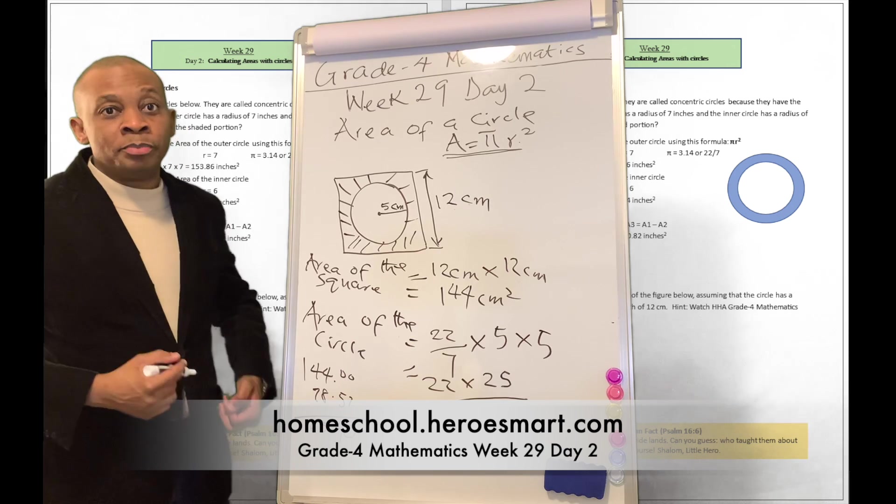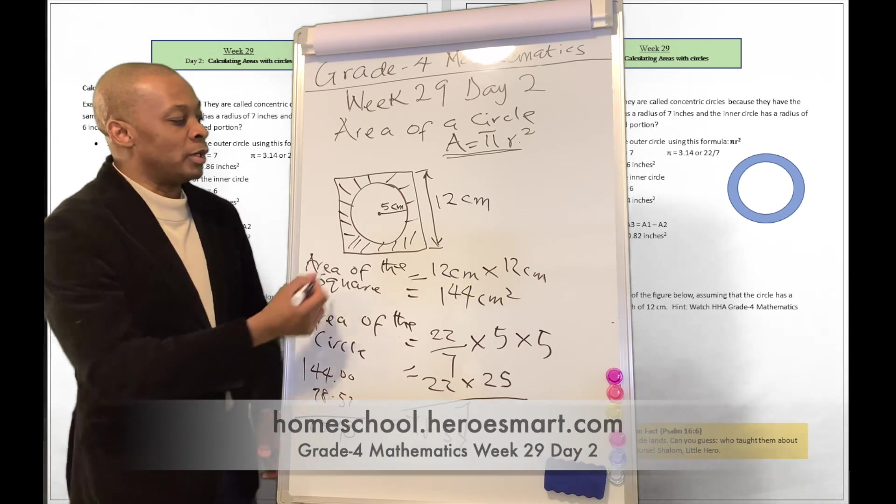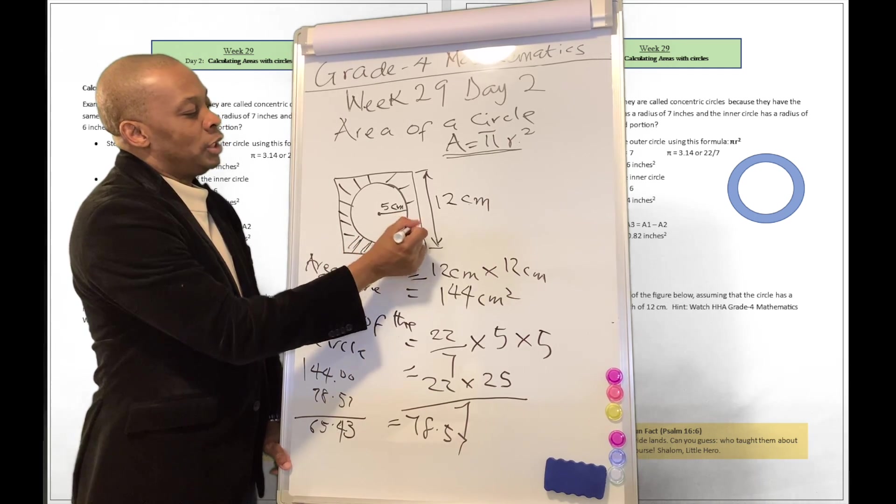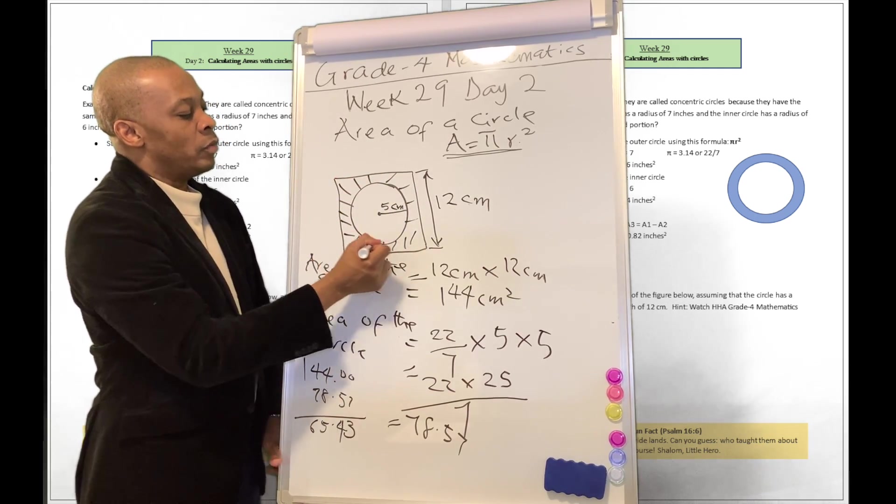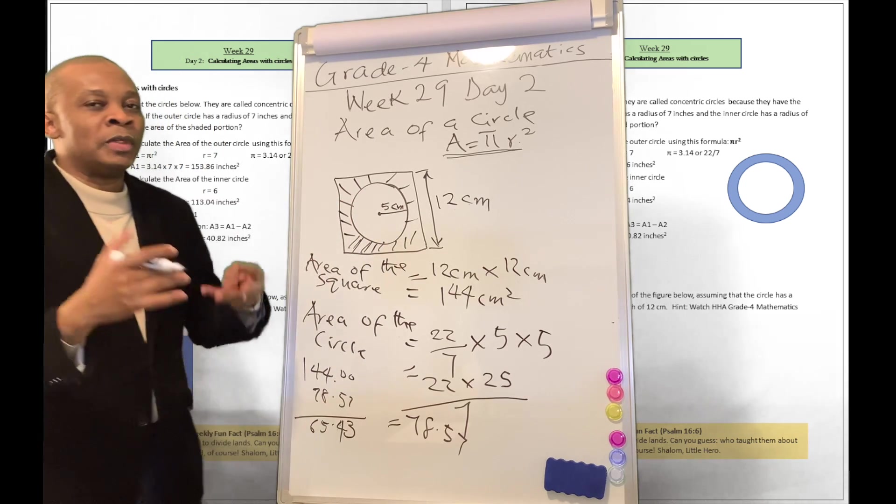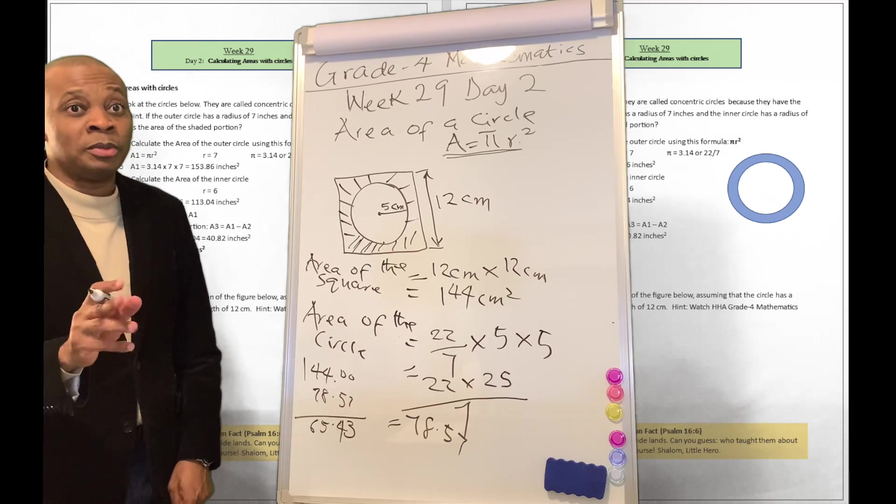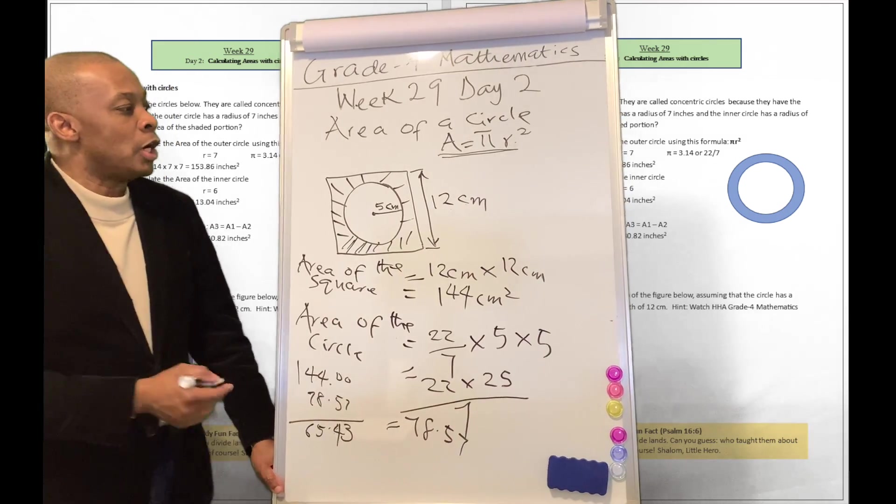Now, they want to give us a big challenge right in here. They say, well, calculate the area of this shaded place. So the shaded place is going to be this area all around the circle, but within the square. How are we going to do that? Well, it's going to be a two-step process, or maybe a three-step process.